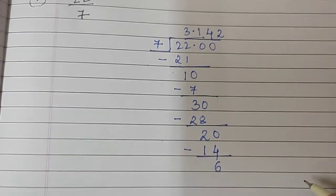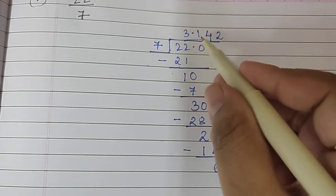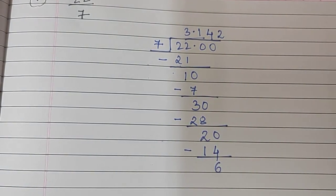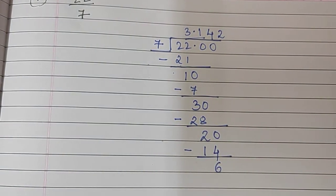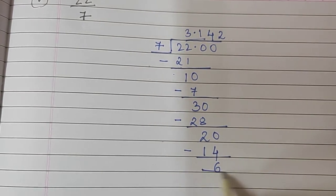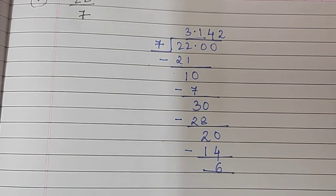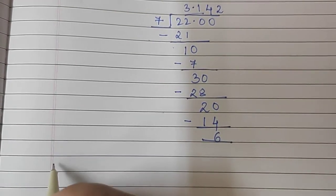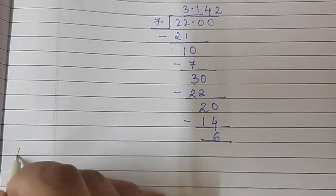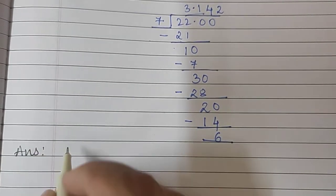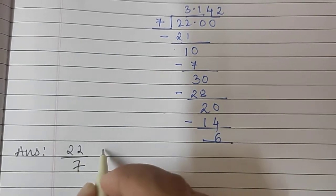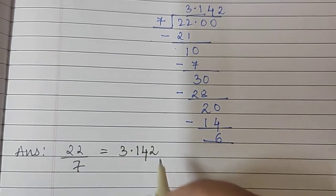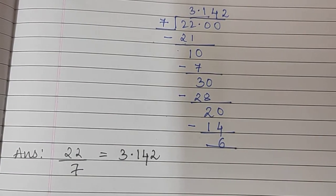Now, we can extend it even more. But we can stop after 3 decimals. If we have found 3 decimals, we will stop. We will not find any more than 3 decimals. So, we will put the remainder as 6. And we will stop here. We will write answer 22 upon 7 is 3.142. Moving to the next sum.